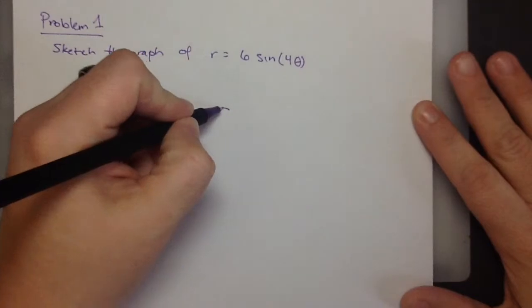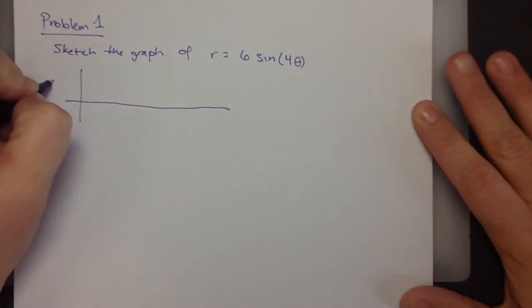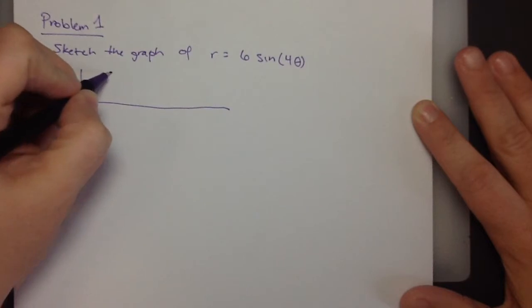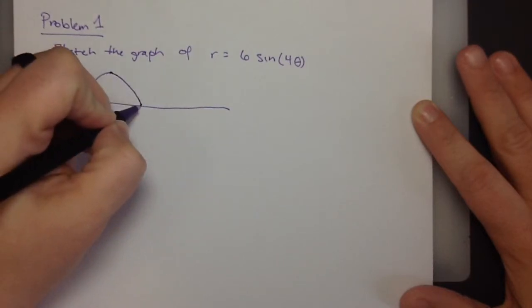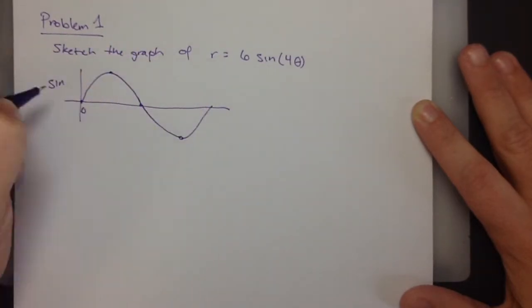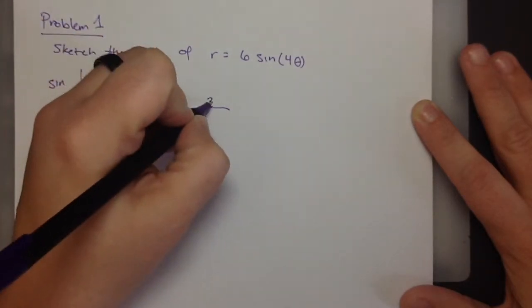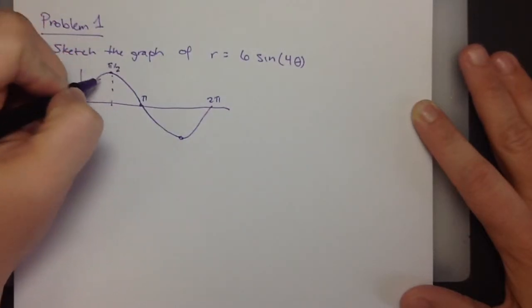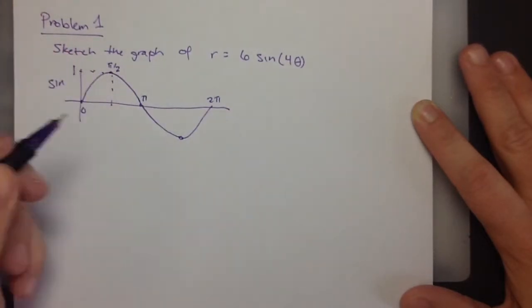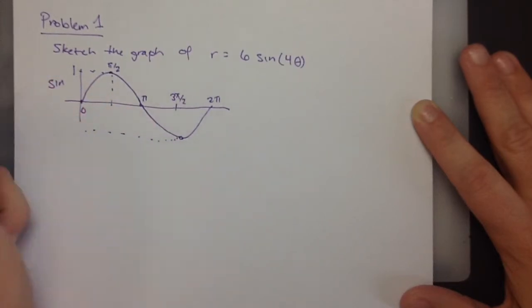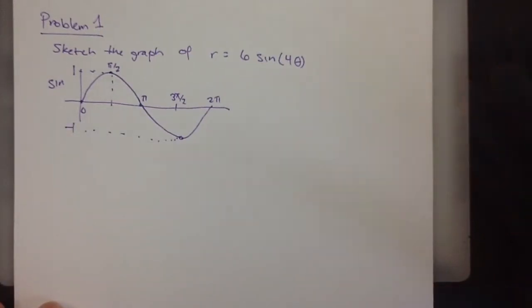So, let's just remember what sine looks like. Sine starts at 0, goes up to 1, goes down to 0, goes down to negative 1, and then back to 0. So, this is 0, pi, 2 pi, and at pi over 2, we have a value of 1. And at 3 pi over 2, we have a value of negative 1. So, that's what sine looks like.